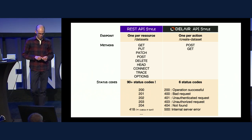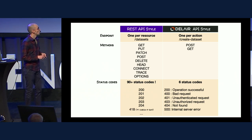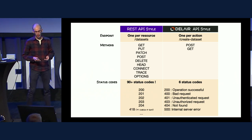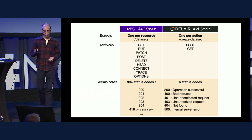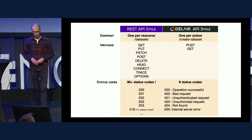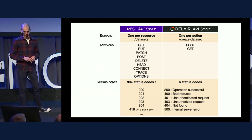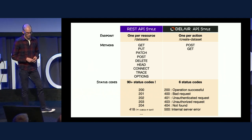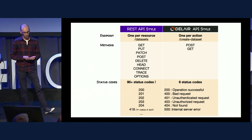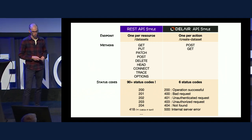If we compare it to the REST API: we now have one endpoint per action instead of one per resource. We use only two methods — POST and GET — instead of the nine available by HTTP. And same for status codes: you have 90 available, and we only use six of them. It's basically just much more simple.